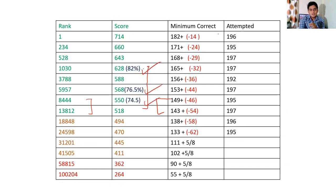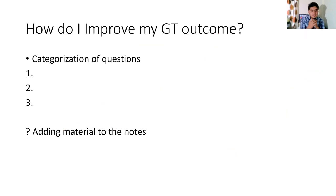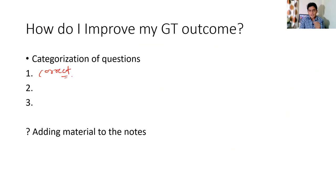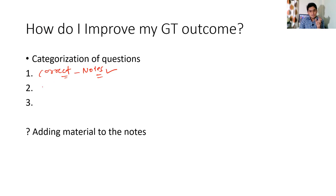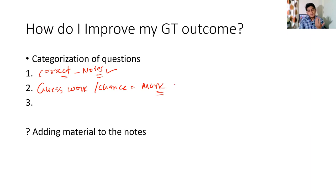This is how you should analyze your GT - not by your rank. Now, how do you improve your GT outcome? When analyzing your grand test, first categorize your questions. Category one: questions you got correct that are already in your notes - you don't have to do anything separately, just keep reading your notes. Category two: questions you got correct by guesswork or by chance - mark these and take a screenshot to revisit them, because if they appear in the exam you might get them wrong.